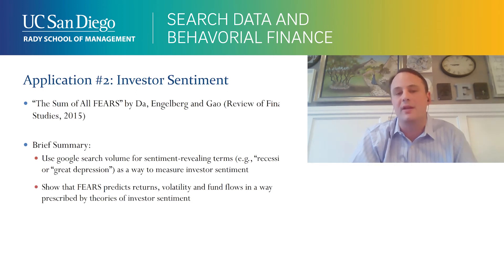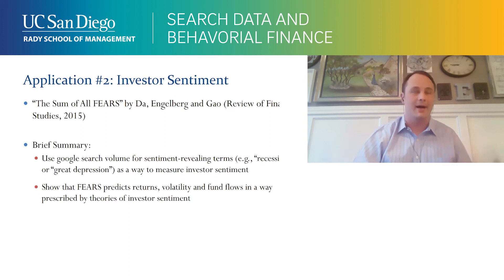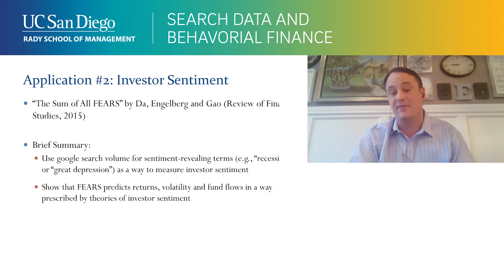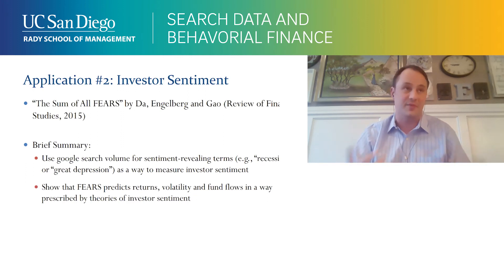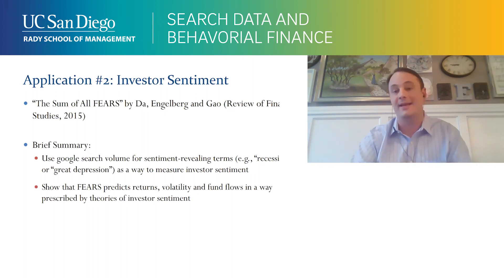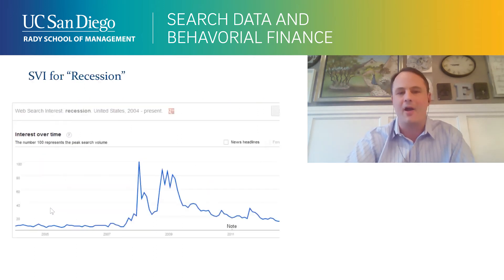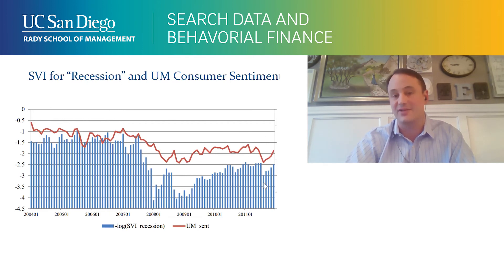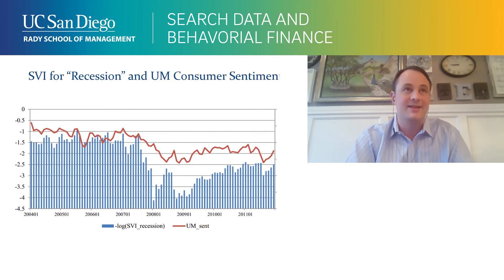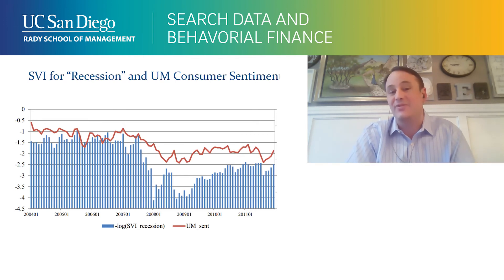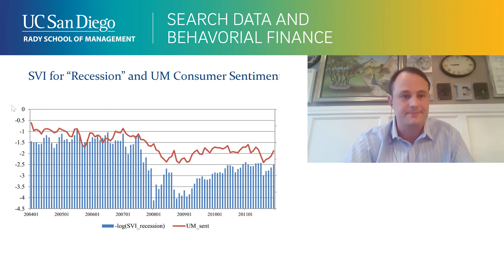The second application — the paper is called 'The Sum of All Fears' — where we build an index of fear-revealing terms like 'recession,' and show that index predicts returns, volatility, and fund flows in a way prescribed by theories of investor sentiment. For example, when people are very fearful, that predicts flows away from equity funds and into fixed income funds. The correlation between searches for 'recession' and the University of Michigan measure of consumer sentiment is about 0.8. Search volume looks like a quick and easy way to gauge the sentiment of a broad population without surveying them.